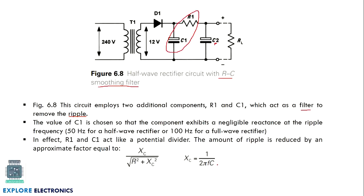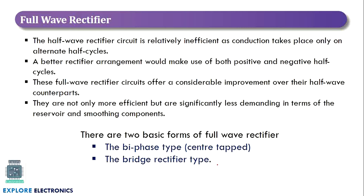Next we have the full wave rectifier. The half wave rectifier conducts only on the positive half cycle, giving only half-cycle output; the negative half cycle produces no output. The full wave rectifier eliminates this limitation — it generates a positive output even during the negative half cycle of the input. We have two types of full wave rectifiers: biphase type (center-tapped full wave rectifier) and bridge type rectifier.